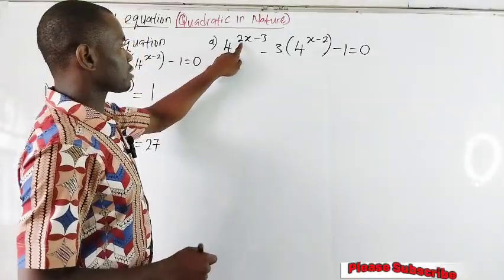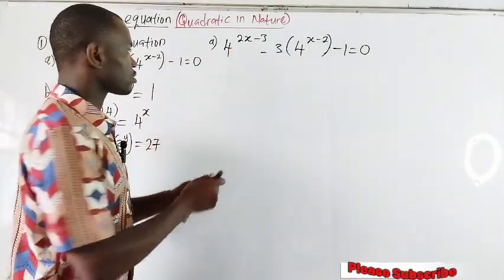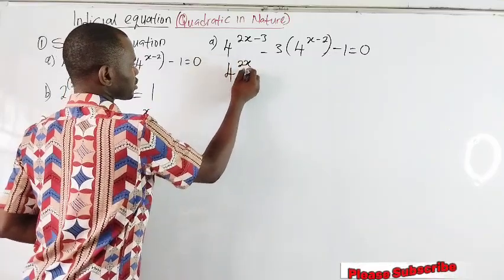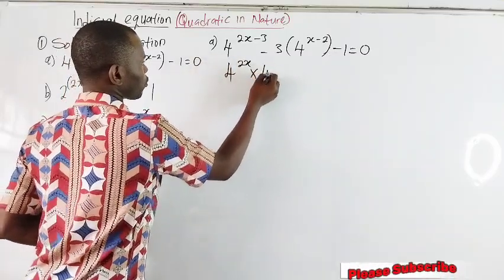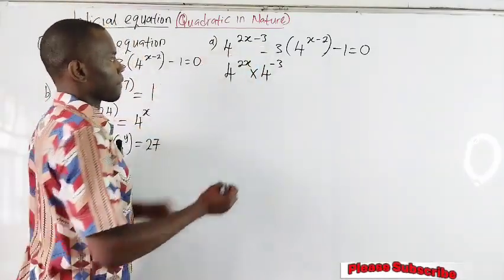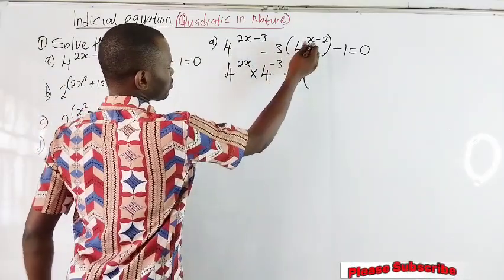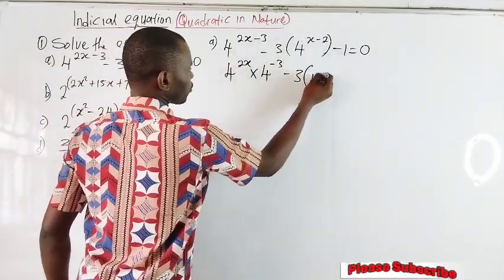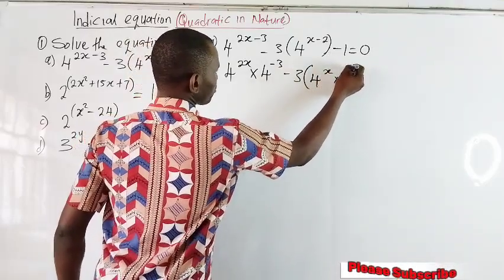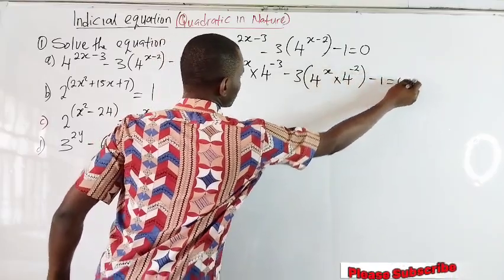The first thing I'll do is to expand these powers to two different bases using multiplication. I'll have 4 raised to the power of 2x times 4 raised to the power of minus 3. Here I'll open a bracket and do the same: 4 raised to the power of x times 4 raised to the power of minus 2, minus 1, equal to 0.